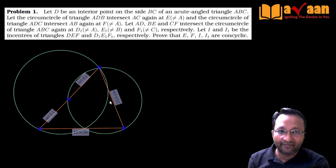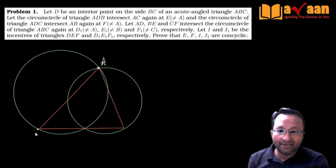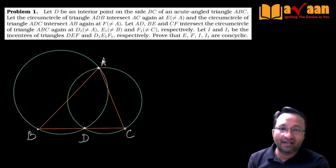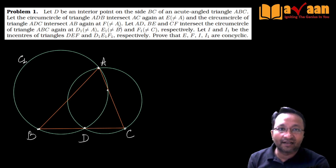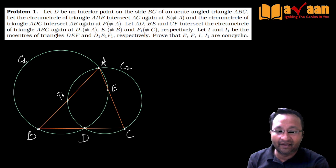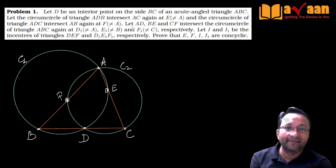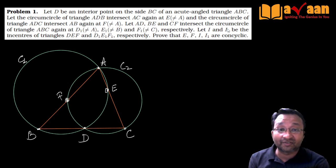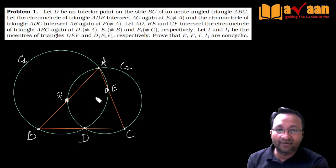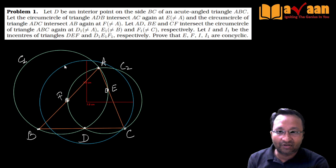So I draw a triangle somewhat like this. What you should do is draw two circles first, then think of the triangle and draw accordingly, so you start the problem properly. This is how it should ideally look. Let me name the points: this is A, B, C, and D is on segment BC. The circumcircle of triangle ABD — call it circle C1 — meets AC again at E, and the circumcircle of triangle ADC meets AB again at F.